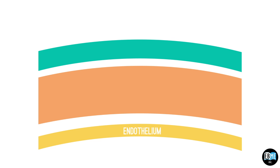The endothelium serves to act as a pump to keep the cornea dry. By keeping the cornea dry, the endothelium maintains clarity and transparency in the cornea.